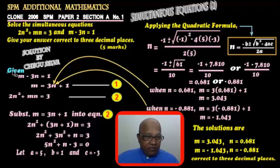Okay, the solution now. Given m minus 3n equals 1, from here we move the negative 3n to the right, so we get m equals 3n plus 1.